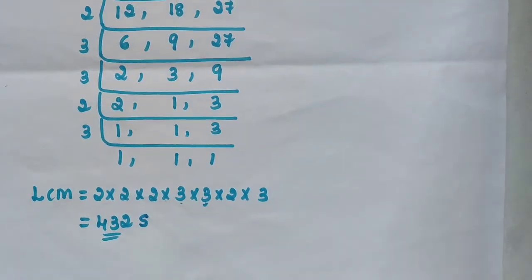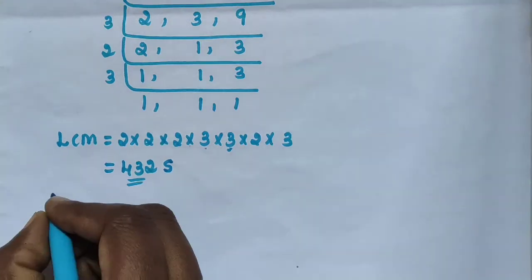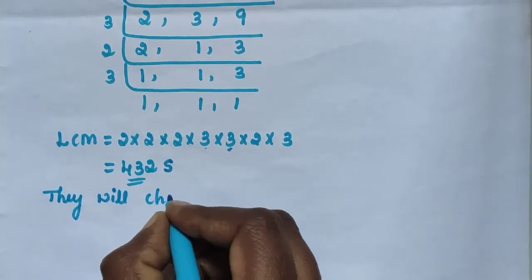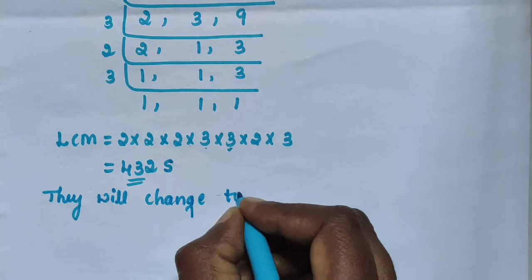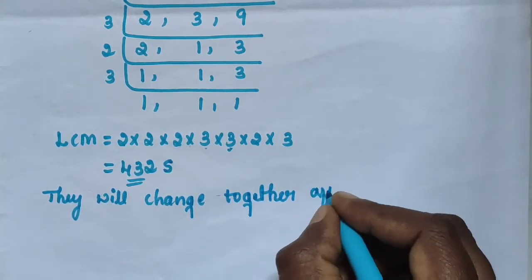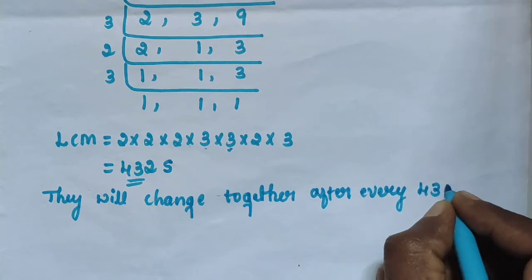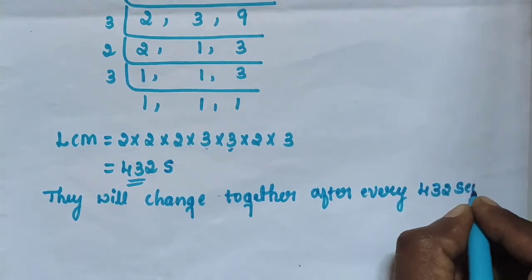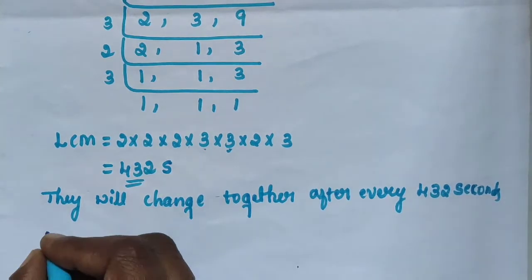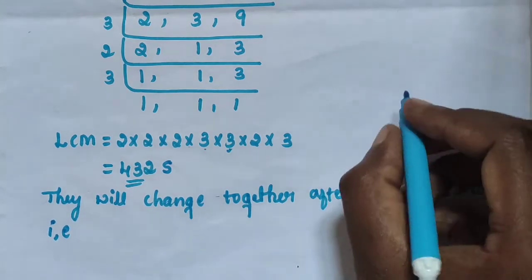They will change together after every 432 seconds. Now convert 432 seconds into minutes.